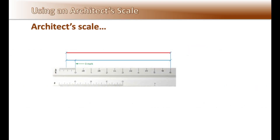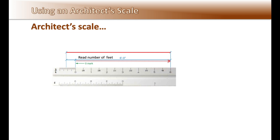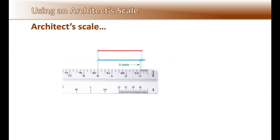To measure a distance with the architect scale, line up the scale so that one end of the line aligns with a full foot mark for the correct scale, and the other end extends past the zero mark into the portion-of-a-foot area. Then read the measurements in feet and add the measurements in inches and fractions of an inch beyond the zero mark. In this example, the measurement in feet is six and the measurement in inches is seven, giving a total length of six feet seven inches. Using the quarter-inch scale to measure another red line, the full feet measure six and the portion of a foot measures three inches, for a total of six feet three inches.